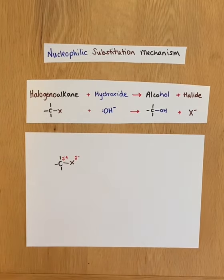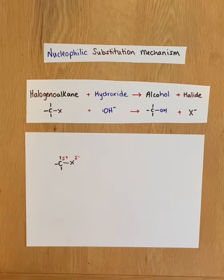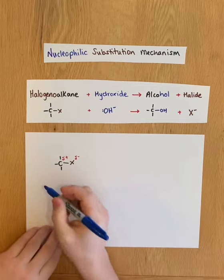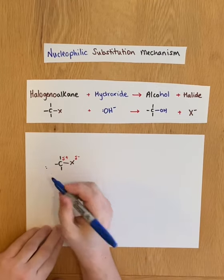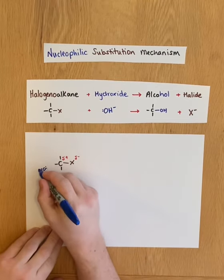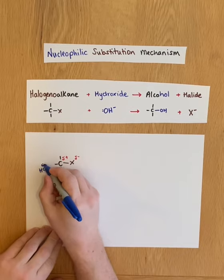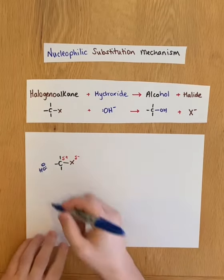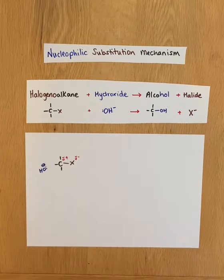This is now our site of attack for our nucleophile. Our nucleophile, in this case the hydroxide ion, has a lone pair of electrons like all nucleophiles have and a full or partial negative charge. In this case the hydroxide ion is negatively charged.